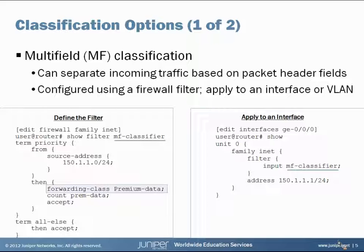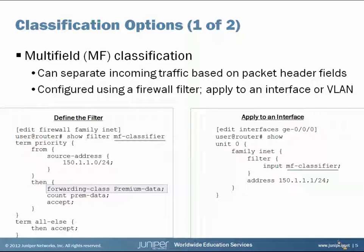You can see examples of the configuration elements at the bottom. On the left you define the filter — within the firewall section — there's a filter called 'mf_classifier'. It has a term that matches against a particular source address subnet 150.1.1/24, and the resulting 'then' statement assigns traffic matching that parameter into the forwarding class called 'premium data'. On the right side, the mf_classifier filter is applied as an input filter on the relevant interface where that traffic is expected to arrive.